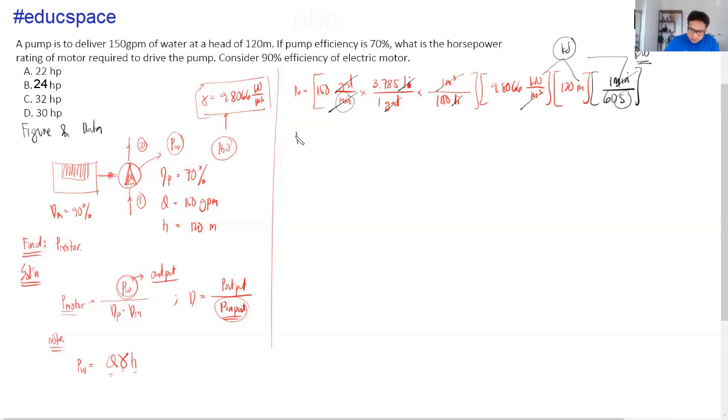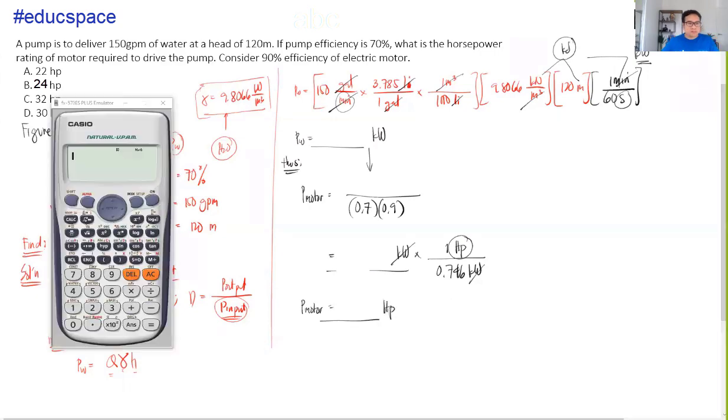Thus, going back in this equation, yung P motor natin is equivalent to this capacity over the efficiency ng pump, which is 70%, 0.7. And then, efficiency ng motor is 0.9. Equal sign. This will be in terms of kilowatts. And as we know, 0.746 kilowatts is equivalent to 1 HP. Why I have to convert this into HP? Kasi yung mga options natin, guys, is naka-HP. So, this means, this will also cancel out. Ang magiging unit natin sa motor is equivalent to HP.